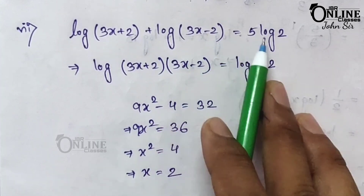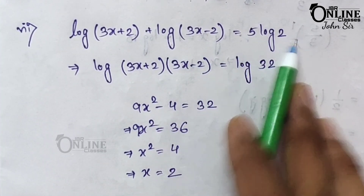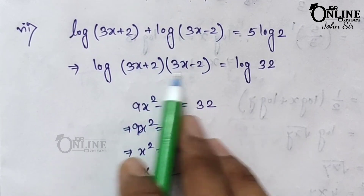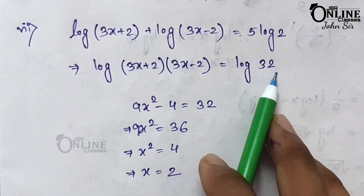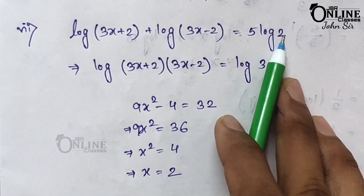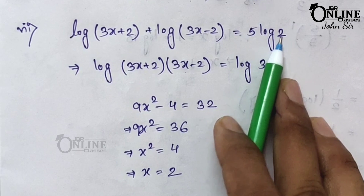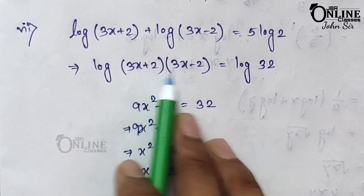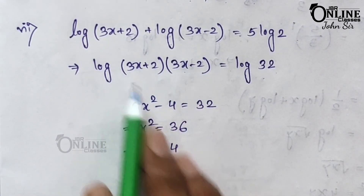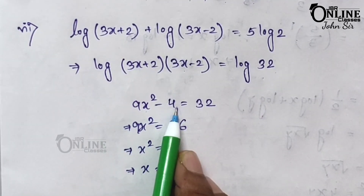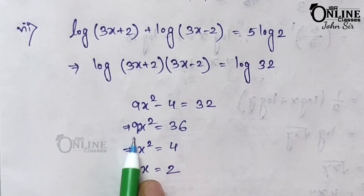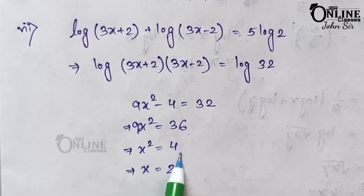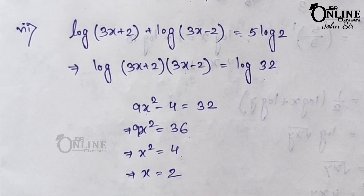Seventh equation: log(3x + 2) + log(3x − 2) = 5 log 2. Left side: log[(3x+2)(3x−2)] = log(9x² − 4). Right side: 5 log 2 = log(2⁵) = log 32. Comparing: 9x² − 4 = 32, so 9x² = 36, x² = 4, and x = 2.